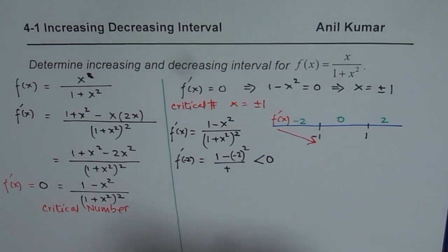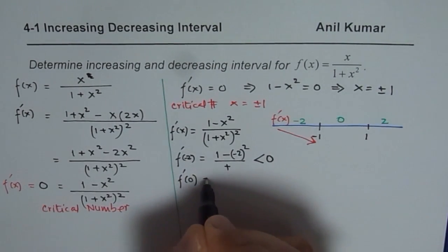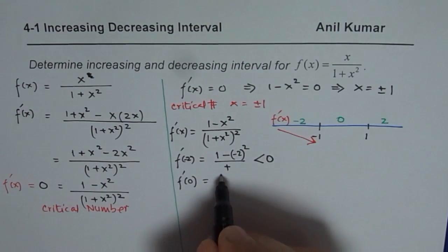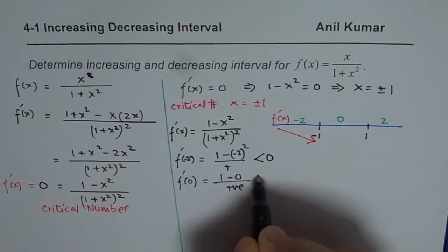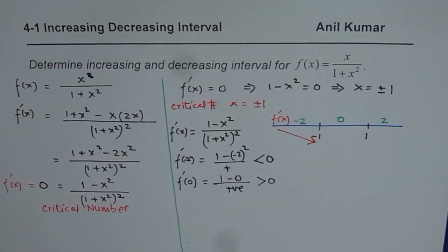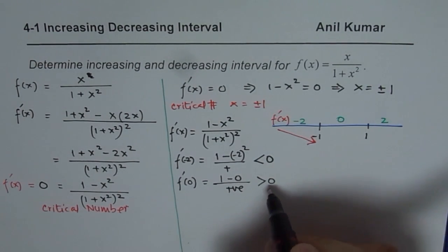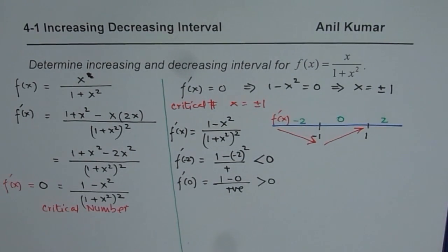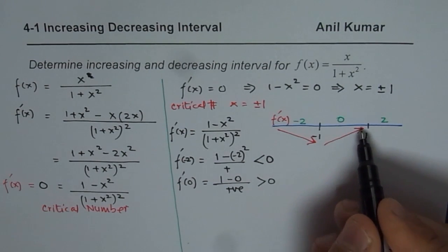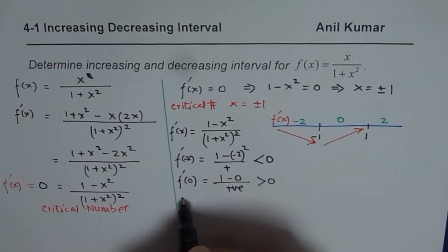Testing x = 0: substituting gives 1 − 0² = 1 over something positive, which is definitely greater than 0. So f'(0) > 0. The slope is positive, meaning the function is increasing on this interval.